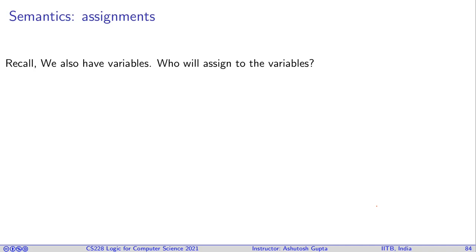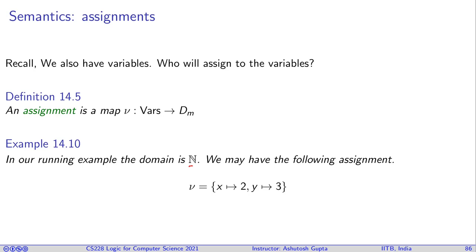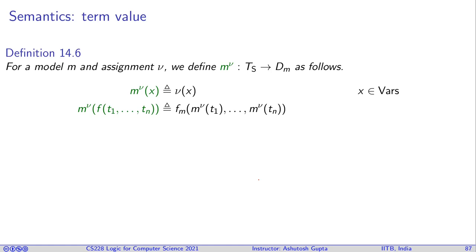We also have variables, so we need to define an assignment. An assignment ν is a map that takes variables and gives them values from the domain. For example, if the domain is the natural numbers, the assignment might be: variable x has value 2, variable y has value 3.